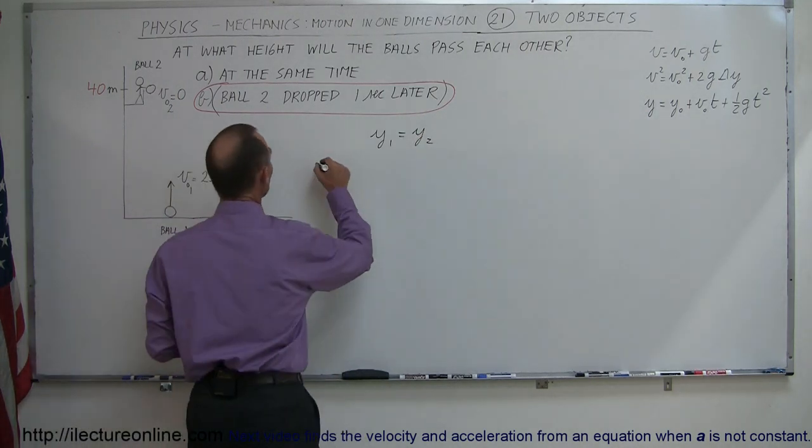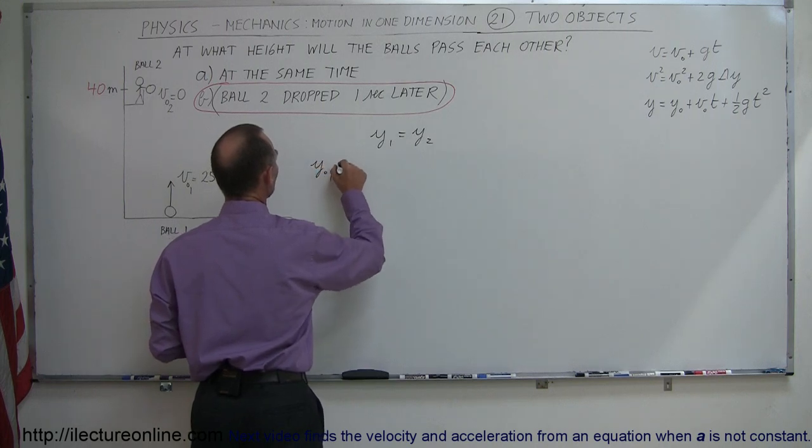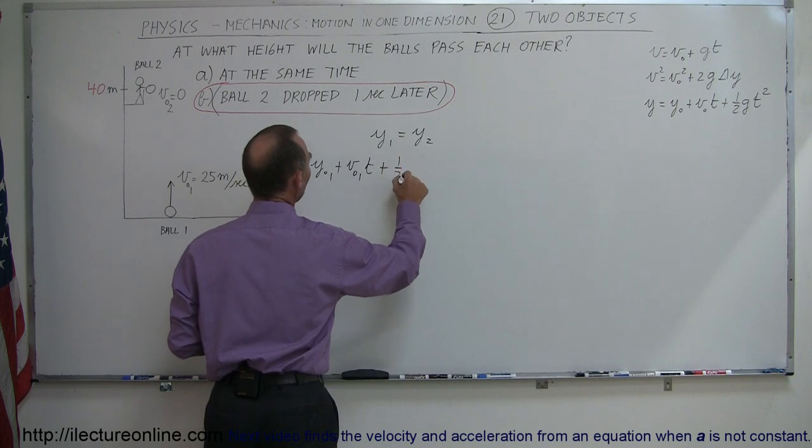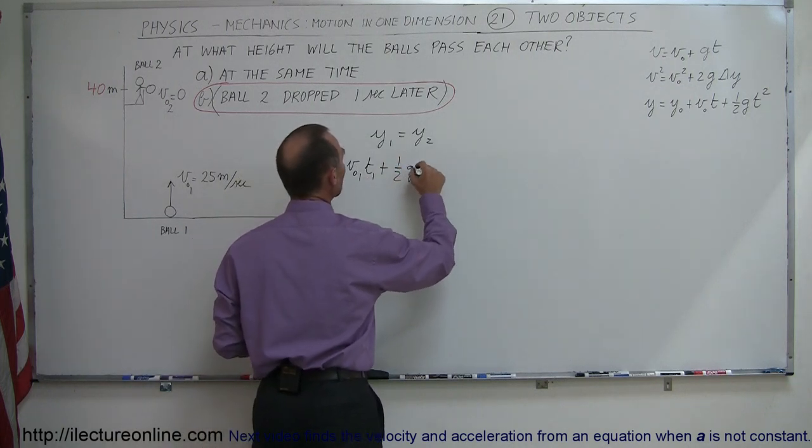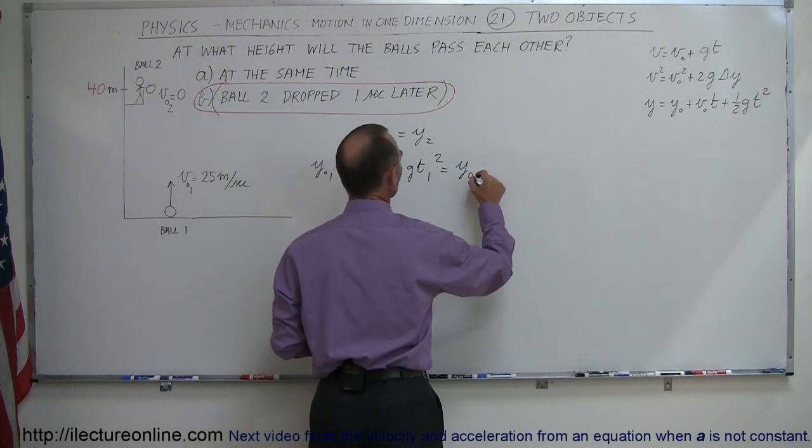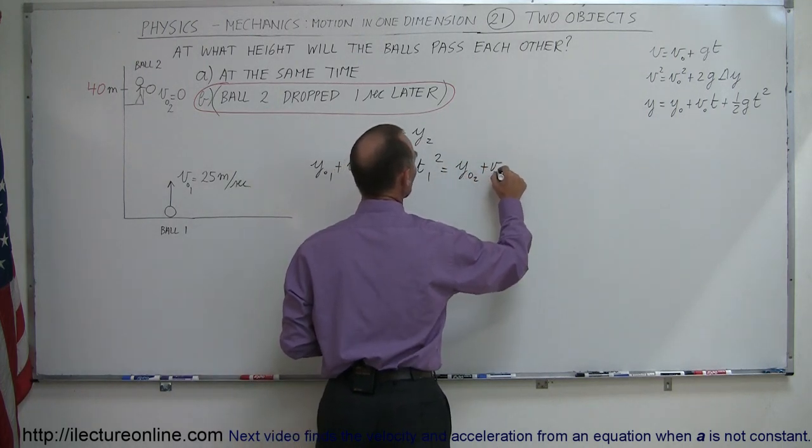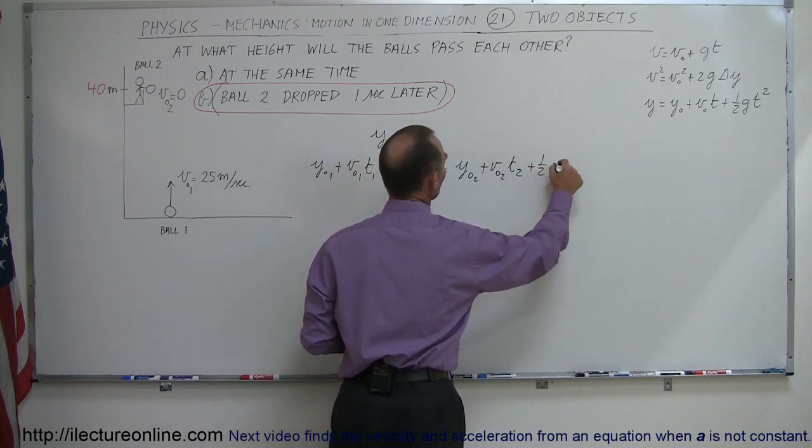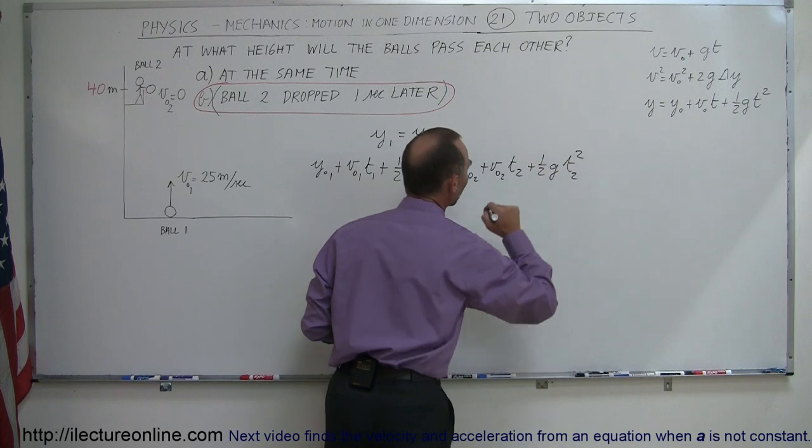The equations are still the same, so we have y initial for the first ball plus v initial for the first ball times t1 plus 1/2 g t1 squared equals y initial for the second ball plus v initial for the second ball times t2 plus 1/2 g t2 squared.